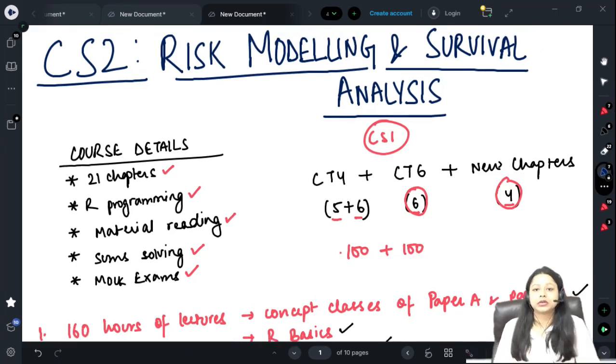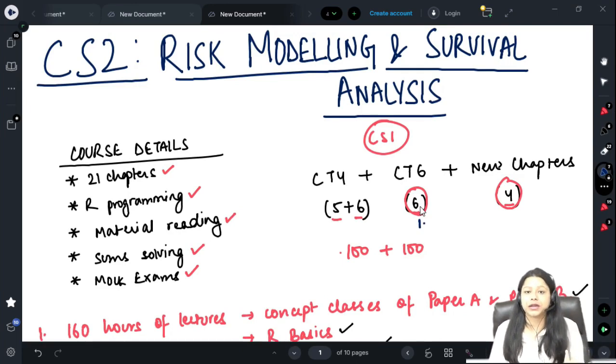I have a particular pattern of taking up the classes. First, I will cover all the CT6 chapters. The reason being that these are comparatively easier, so once you complete all these topics, you can remember it for a longer time. Then we move to the second bit of the CT4 chapters, which is your survival analysis. Then we move to Markov chain and Markov jump, which are very interesting, and we have lot of sum solving classes for these topics. And lastly, we move to the new chapters.